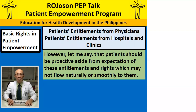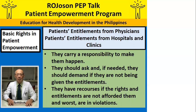However, let me say that patients should be proactive aside from the expectation of these entitlements and rights, which may not flow naturally or smoothly to them. They carry a responsibility to make them happen. They should ask, and if needed, they should demand, if they are not being given the entitlements. They have recourses if the rights and entitlements are not afforded them and, worse, are in violation.